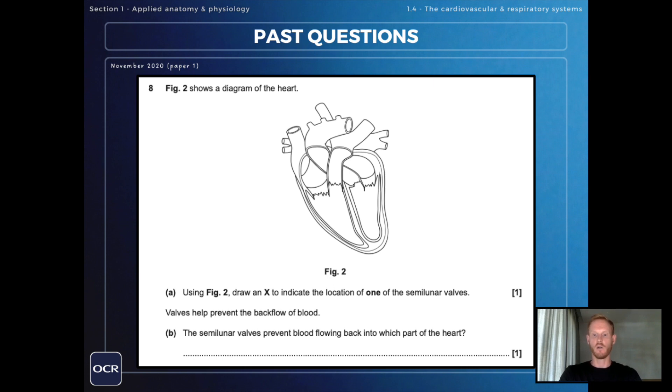Now the semilunar valves are the valves at the entrances to the major arteries. So we could have drawn an X at the entrance to the pulmonary artery or the aorta, and I've chosen the pulmonary artery here.